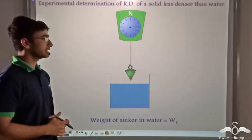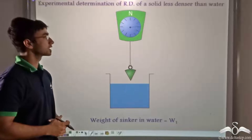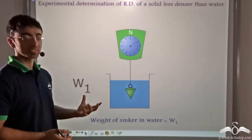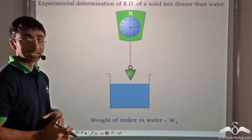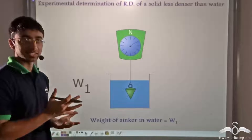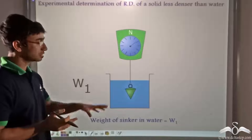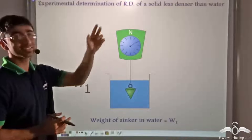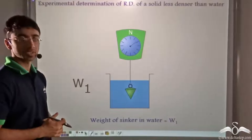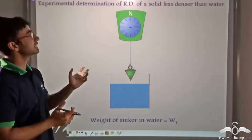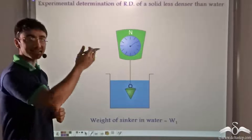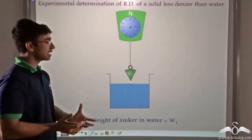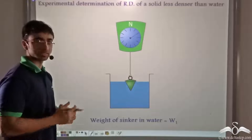If you take a look at the animation, you will find that a metallic sinker is being dipped in water. Now we have to find out the relative density of not the metallic sinker but a solid which is less dense than water. So in order to find out the relative density of a solid less dense than water, we need to carry out an experiment with a slight twist.